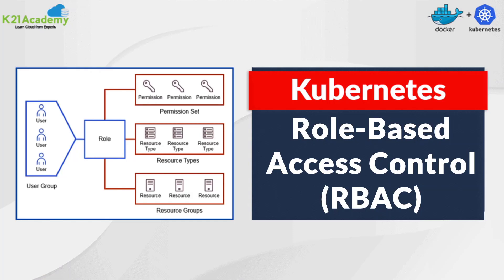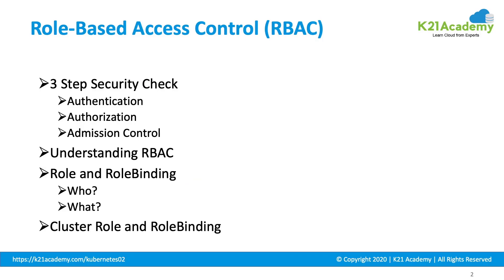Role-based access control is a method of restricting network access based on the roles of individual users within an enterprise. RBAC lets employees have access rights only to the information they need to do their jobs and prevents them from accessing information that doesn't pertain to them.